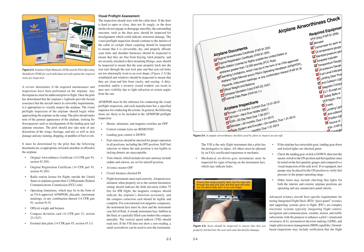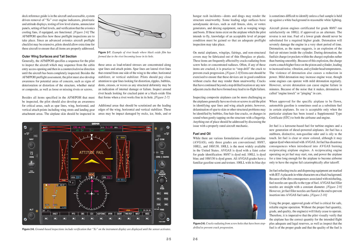Ground-based inspections may include verification that the flight deck reference guide is in the aircraft and accessible, system-driven removal of X's over engine indicators, PDO/static and attitude displays, testing of low-level alarms, enunciator panels, setting of fuel levels, and verification that the avionics cooling fans, if equipped, are functional. The AFM/POH specifies how these preflight inspections are to take place. Since an advanced avionics aircraft preflight checklist may be extensive, pilots should allow extra time for these aircraft to ensure that all items are properly addressed.